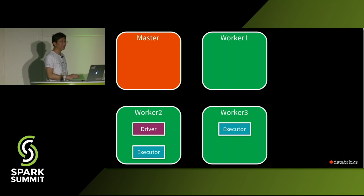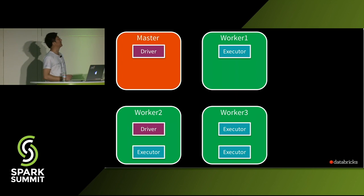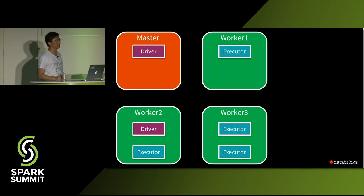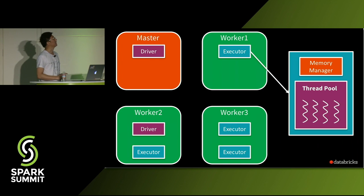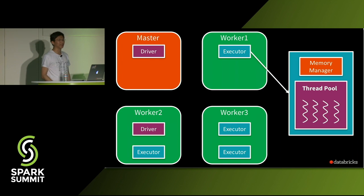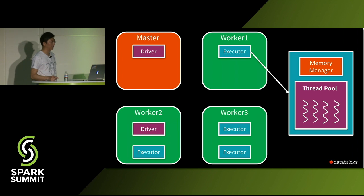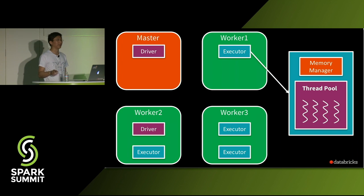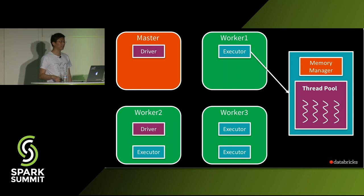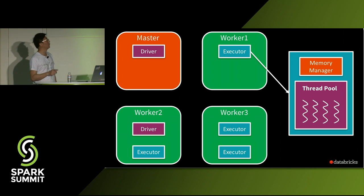Other users can also submit other applications, creating more Java and executor processes. Inside the executor — which is a JVM process — we have a memory manager and a thread pool, because Spark uses a thread model. Tasks run as single threads in the executor. For today's talk, we will focus on the memory model inside one executor, not the cluster level.